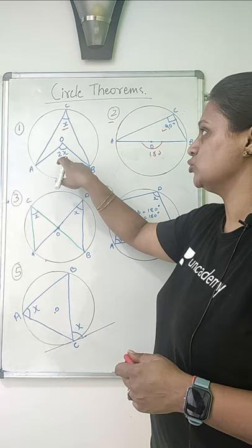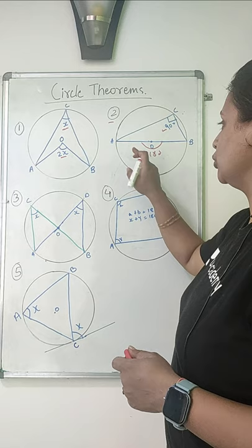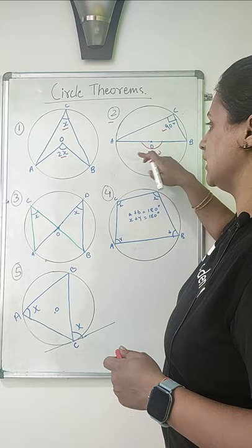is twice the angle made at the circumference, so 2x and x. The second law says that if we construct an angle on a semicircle from the diameter, it is always 90 degrees. This law relates to the first because the